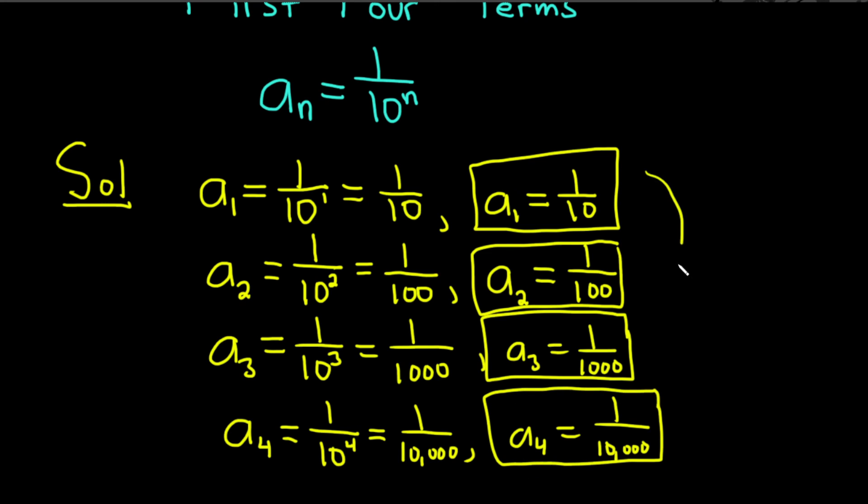And that's it. These are the first four terms of the sequence a sub n equals one over ten to the n. I hope this video has been helpful to someone out there in the world. Good luck.